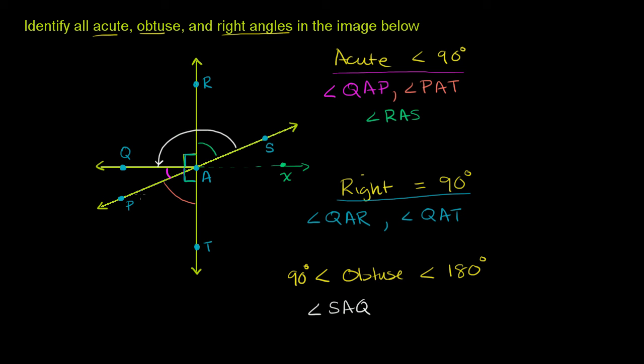Now another obtuse angle, I'll do this in a different color, here, looks like RAP, angle RAP. Once again, it contains RAQ in it, which is 90 degrees, and it opens up even wider than that.